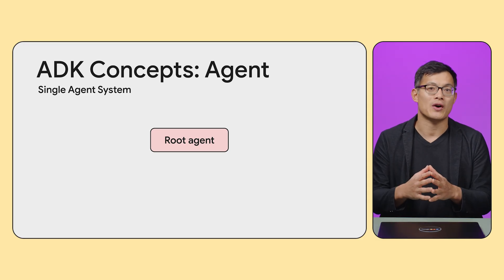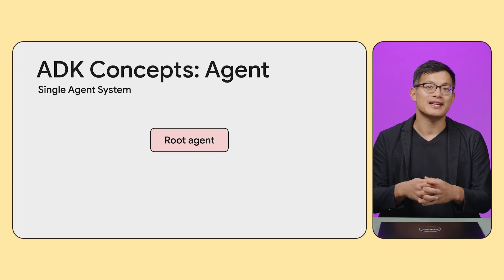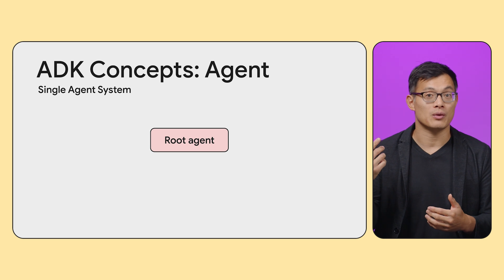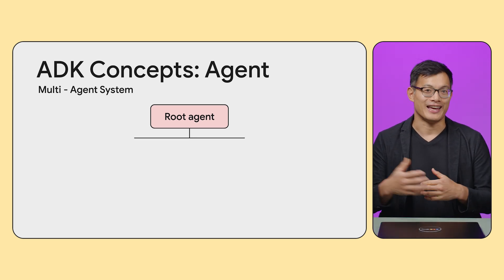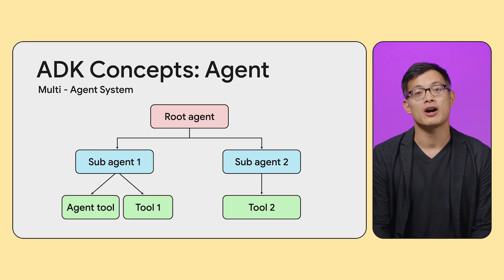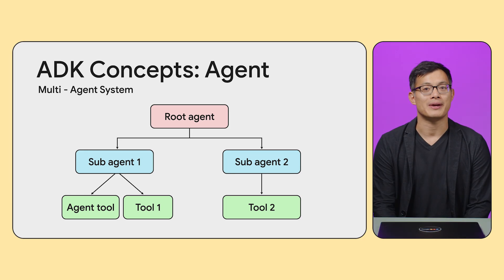This brings up an important question when designing agentic systems: how do you decide whether to use a single agent, multiple agents, or a workflow? A single agent is suitable when the task requires reasoning and dynamic tool use based on input, but the overall process isn't easily broken into distinct sub-problems, or when there aren't too many tools at its disposal. Multiple agents are ideal for complex problems that naturally decompose into smaller, more manageable subtasks or require different areas of expertise — for example, an e-commerce order processing system using separate agents for inventory, payment, and shipping. This approach offers modularity but may introduce communication overhead or latency.